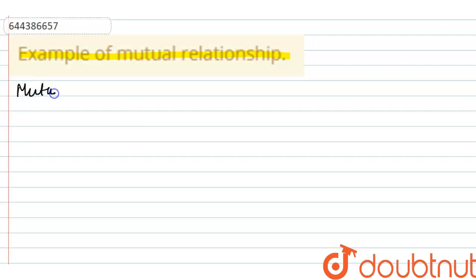So if we talk about mutual relationship, then in this type of relationship both the organisms are benefited. And these organisms get their benefit from one organism and other organisms.